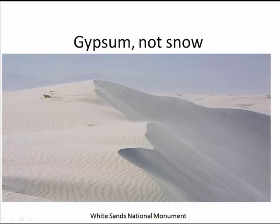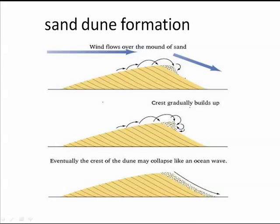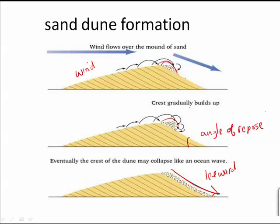But at White Sands, that's not snow — that is gypsum. As a sand dune forms, sand hops up the windward side and builds up in a pile at the top. Finally the pile gets too steep and has to collapse as a small avalanche down the leeward side. The sand cannot support itself beyond a certain angle — that angle is called the angle of repose. For sand dunes, the angle of repose tends to be about 33 to 34 degrees.